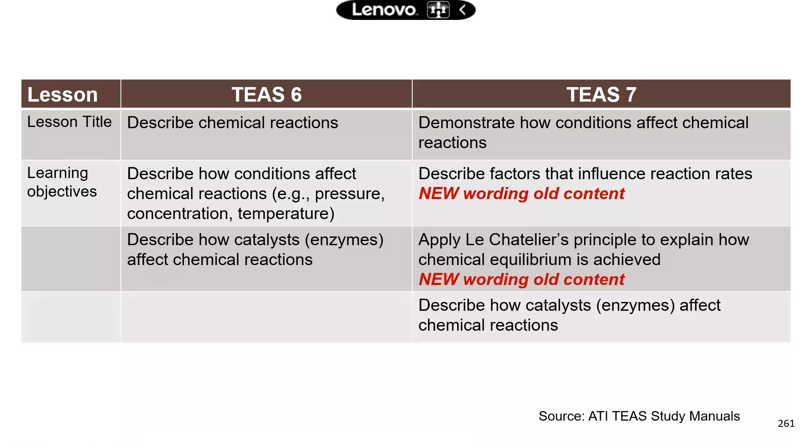As you can see in this comparison table, TEAS has some new wording for the learning objectives. It specifically says you need to be able to describe factors that may influence reaction rates. So some of the factors we have covered previously for TEAS 6, and they're really the same. There's no change.